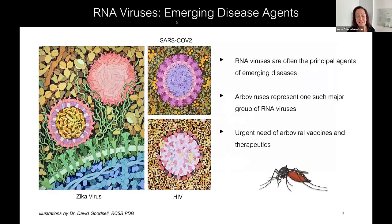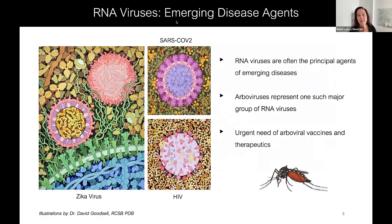I don't need to convince anybody here that RNA viruses are really important. We're just coming out of this SARS-CoV-2 pandemic, and it's really evident the amount of damage that these tiny genomes can inflict upon our health and our economies. But arboviruses — viruses that are transmitted by arthropods — are a really important group of RNA viruses, and there are few vaccines and other therapeutics.